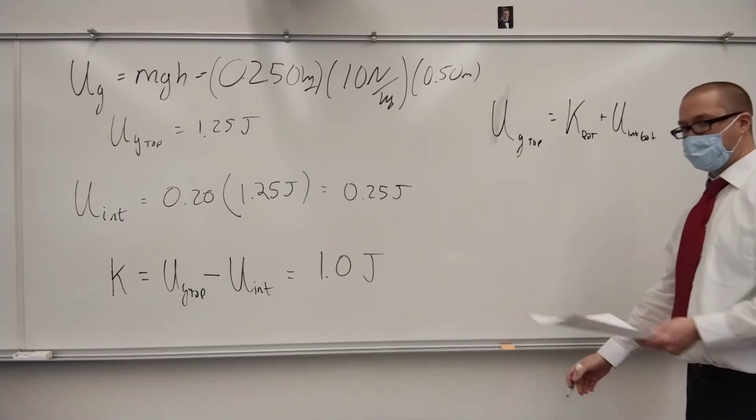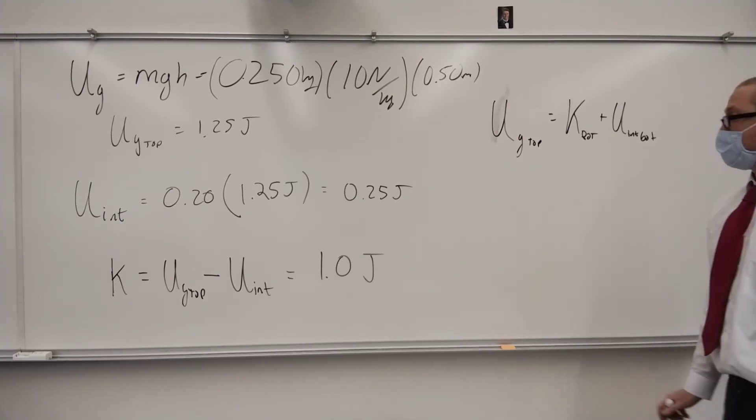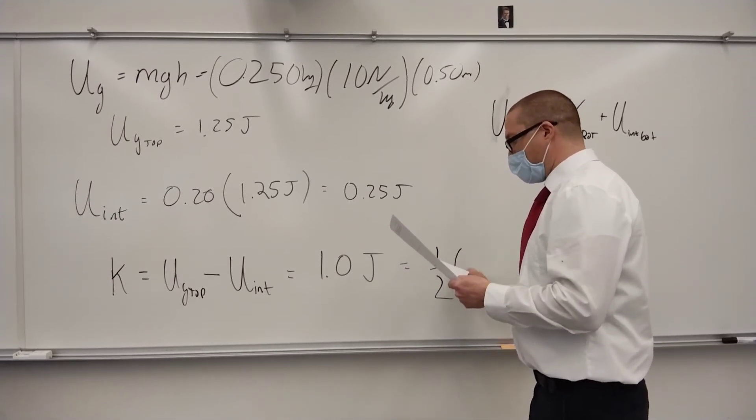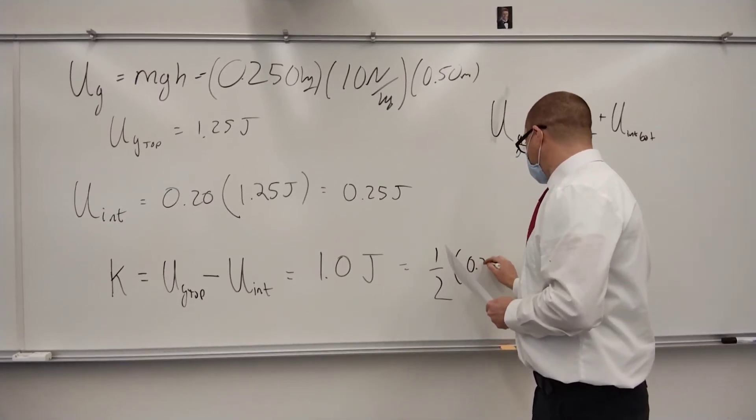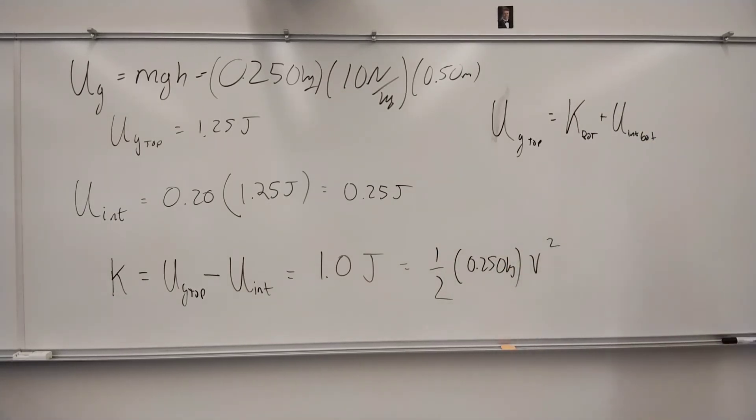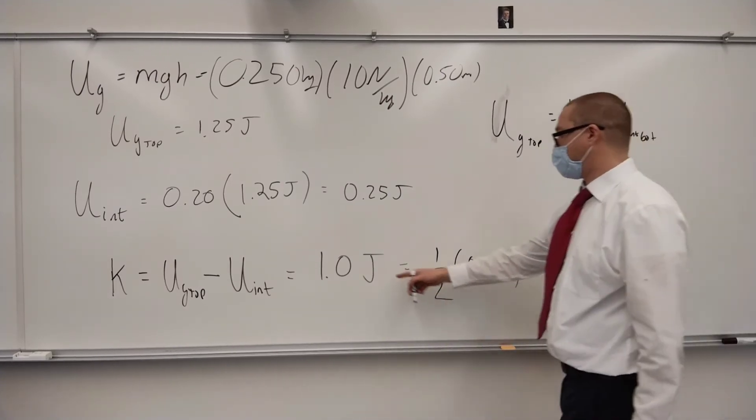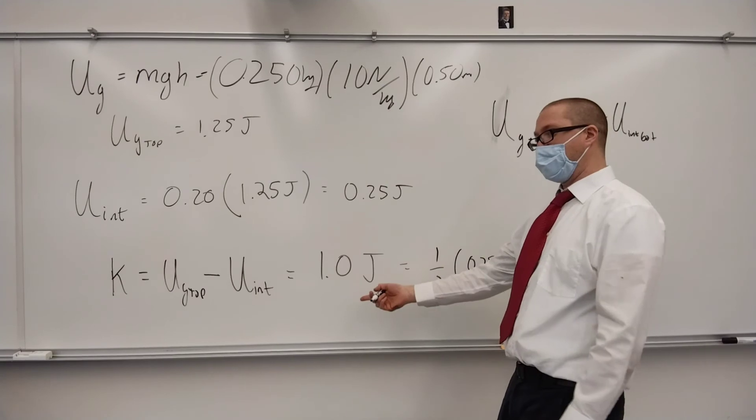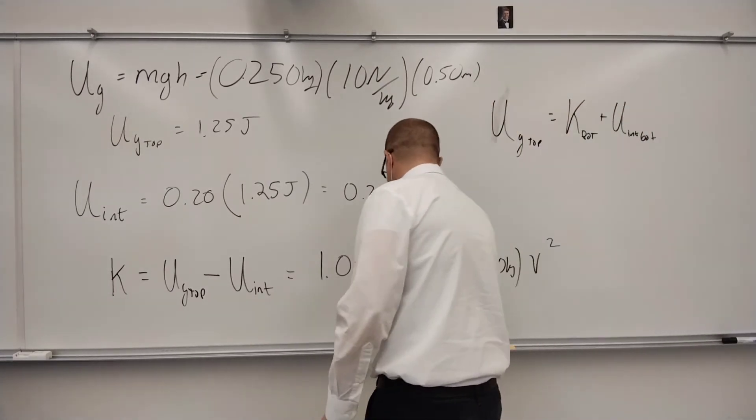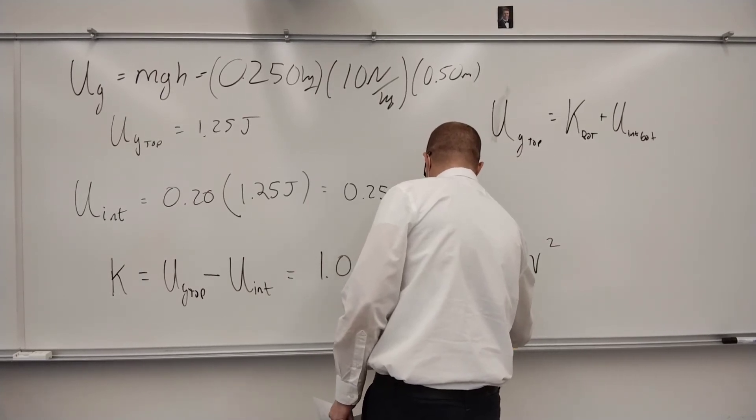So then we take that, set that equal to one half mv squared, 0.250 kilograms times v squared, and it looks like we're going to get two meters per second, does that look right? 2 times 1 is 2 divided by 0.25, that's going to be about 4, square root of that, the final speed at the bottom is about 2.0 meters per second.